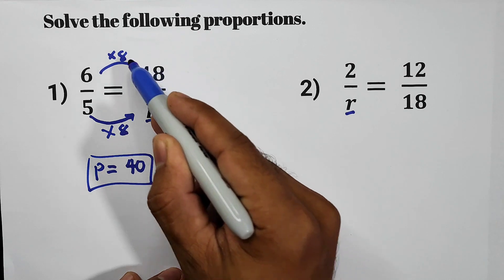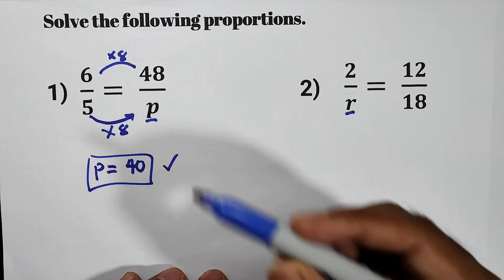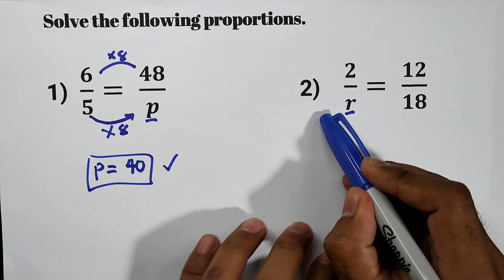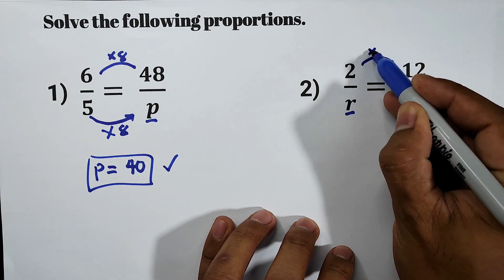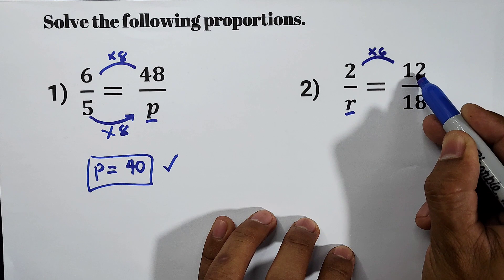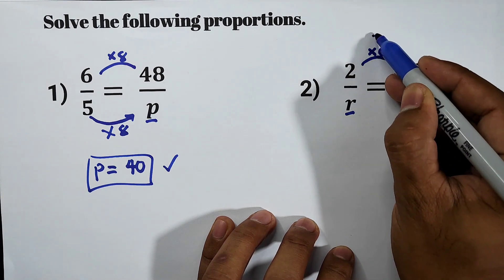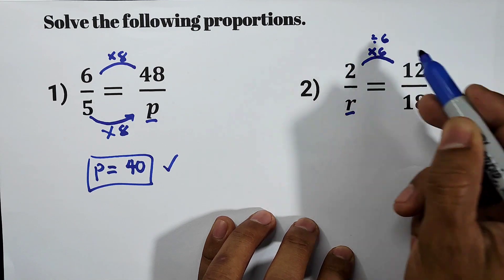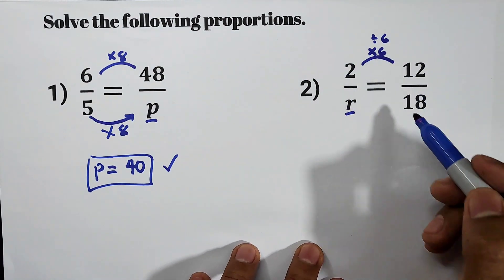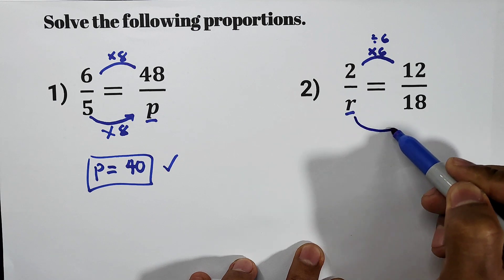Let's say for item number 1, you multiply it by 8, that's why it becomes 48. Or you divide it by 8, it becomes 6. Same with item number 2. You multiply it by 6 to make it 12, or you divide it by 6, the 12 to make it 2. Vice versa.